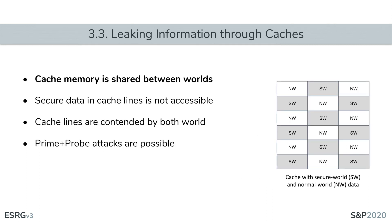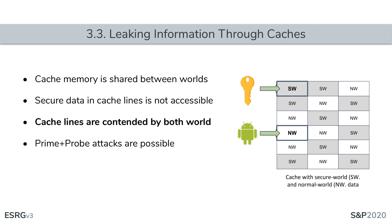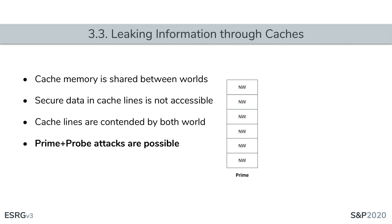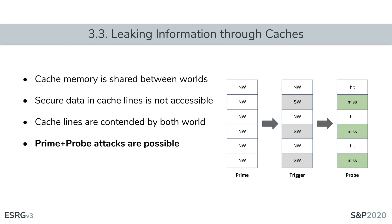The other hardware problem is leakage of information through caches. TrustZone creates two environments which share the same hardware, and sharing hardware resources is a surefire way to leak information. Even though secure data in caches is not accessible to the normal world, cache lines are contended by both worlds, meaning both compete for their utilization. This enables attackers to mount prime-and-probe attacks — they first put the cache in a known state, trigger the secure world to execute, and then assess the cache state — allowing retrieval of secrets such as cryptographic keys.